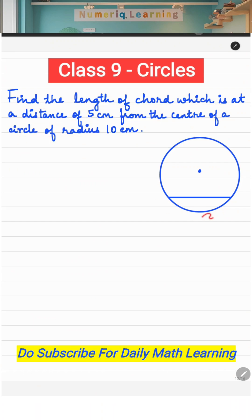So you have a circle, and let this be the chord AB. This is the center O. The distance of the chord from the center is given to you, which is 5 centimeters.